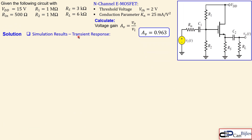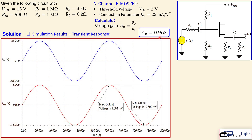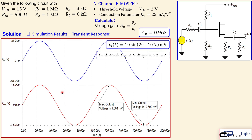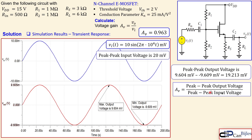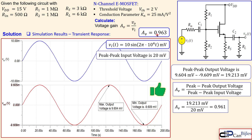Looking at the transient simulation result, the blue trace is the input voltage — 10 mV peak at 10 kHz, so 20 mV peak-to-peak — and the red trace is the output, which is in phase. From the maximum and minimum output values, the peak-to-peak output is 19.213 mV. Dividing output by input gives a simulated gain of 0.961, compared to our calculated value of 0.963. These are very close, confirming the calculations are correct.